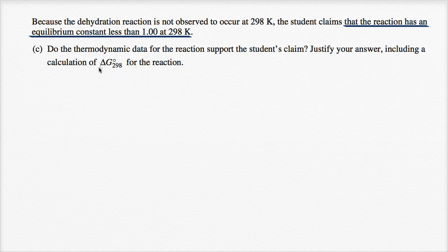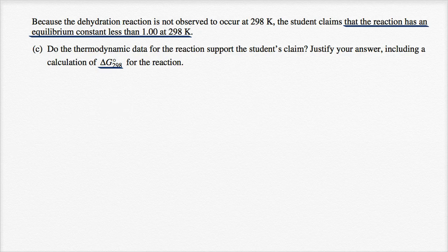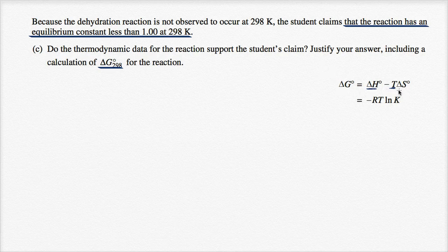Let's think about whether we can calculate delta G with the information given. One of the formulas provided gives delta G based on temperature, the change in entropy, and the change in enthalpy. They give us the change in standard enthalpy for the reaction, the temperature of 298 Kelvin, and the change in standard entropy for the reaction.